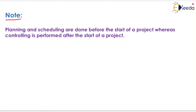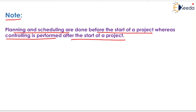One important note: planning and scheduling are done before the start of a project, whereas controlling is performed after the start of the project. Before starting the project, we plan and schedule all activities so it completes within a particular time interval. After the project starts, if any activity is behind schedule, we control that activity to finish it quickly so the project is completed within the minimum time period.